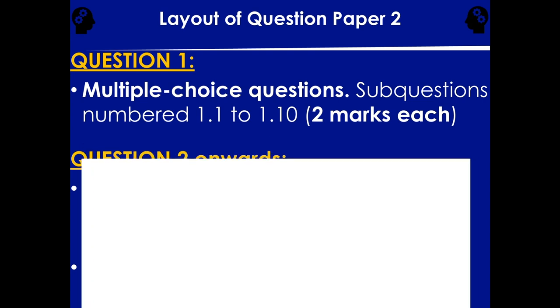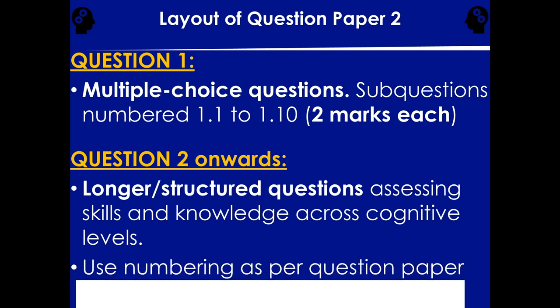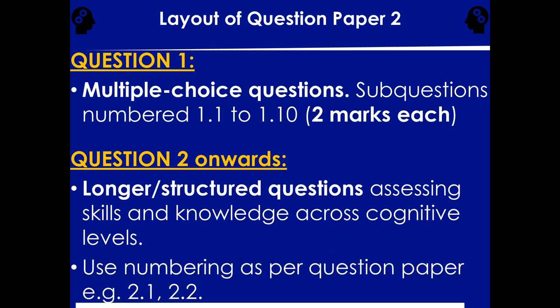Questions 2 through 9 are longer questions and they have levels. Level 1 are your definitions. Level 2 are your calculations. Level 3 are more complex calculations, and Level 4 are typically unseen questions. You must use the numbering exactly as it appears in the question paper, so that the markers — who are complete strangers to you — will know exactly which question you're answering.